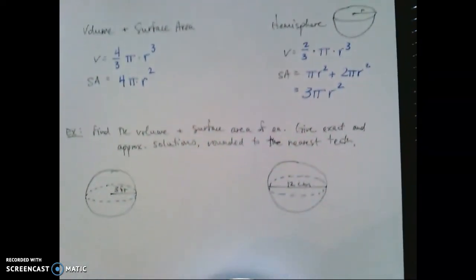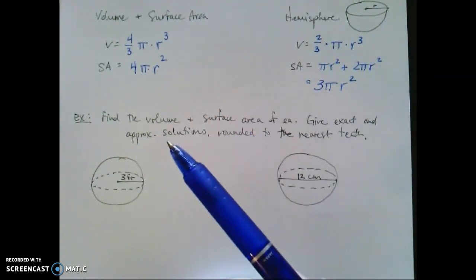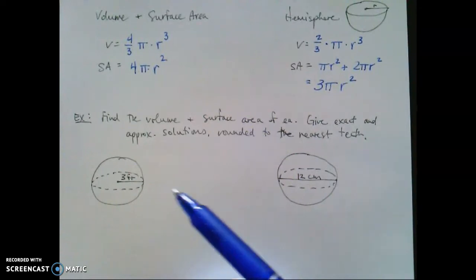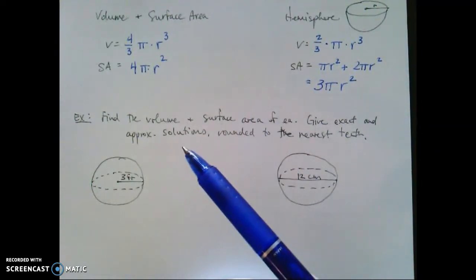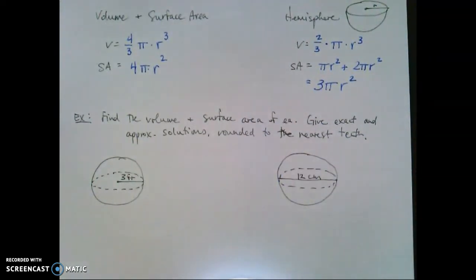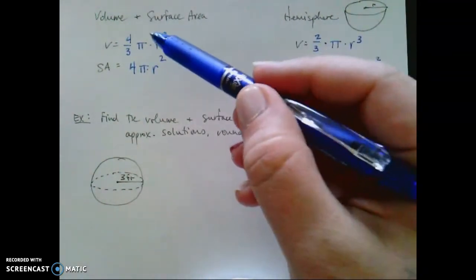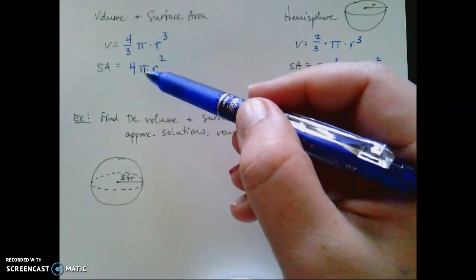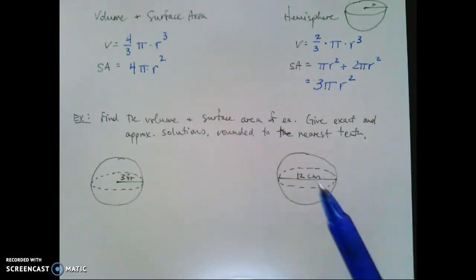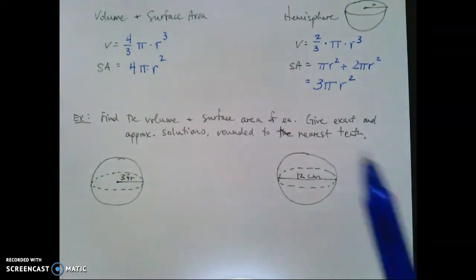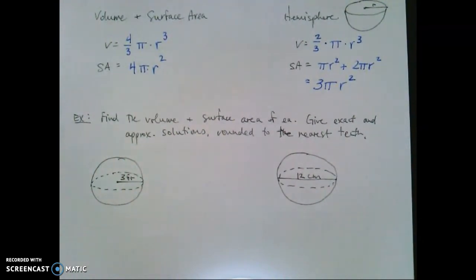So with that in mind, we actually did a little bit of this yesterday with surface area, but now we're going to find volume and surface area of each sphere. So here, we're asked to give the exact value and approximate solutions, this time rounded to the nearest tenth. So what I would like for you to do is pause. You have the two formulas here for volume and surface area. Take a couple of minutes, find the volume and surface area, both exact and approximate for each, and then come back and let's check.